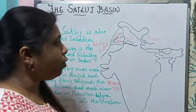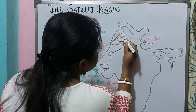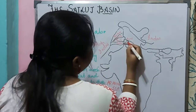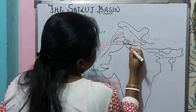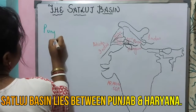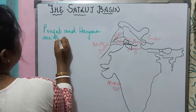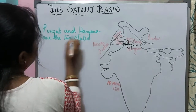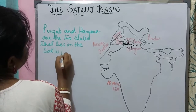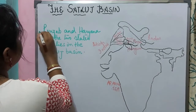The two states that lie in the Satluj basin are Punjab and Haryana.